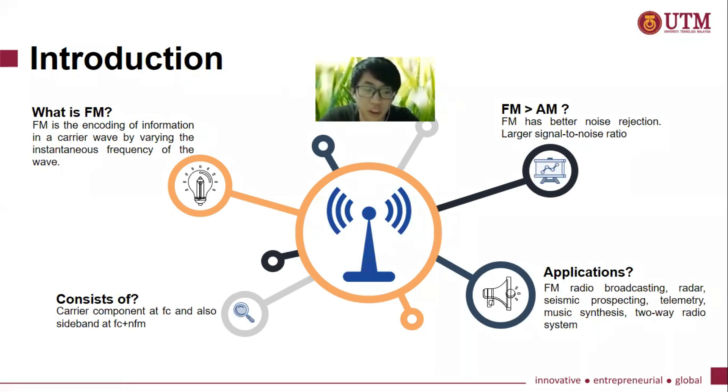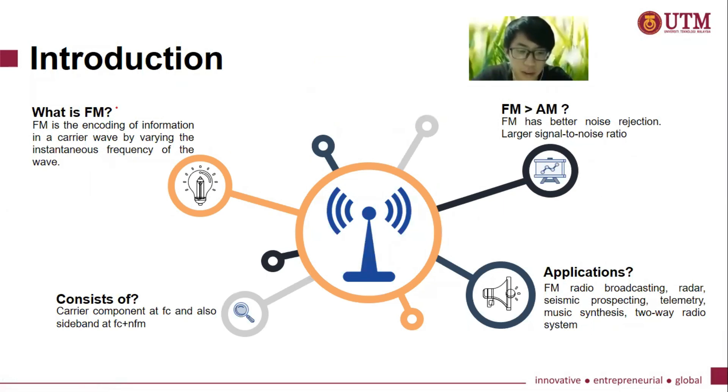So what actually is FM? FM is the encoding of information in the carrier wave by varying the instantaneous frequency of the wave. FM also consists of carrier component at FC and also sideband at FC plus the number of band times FM.